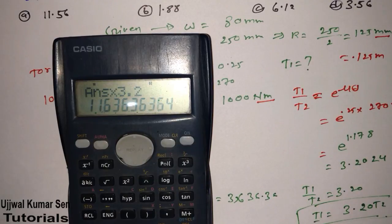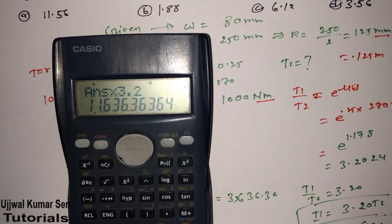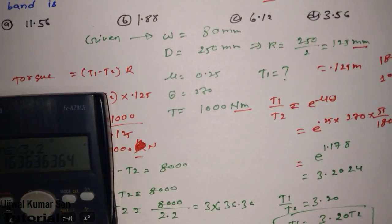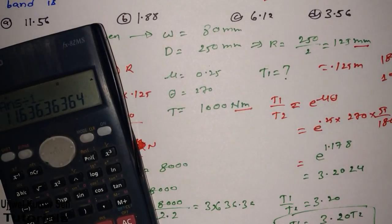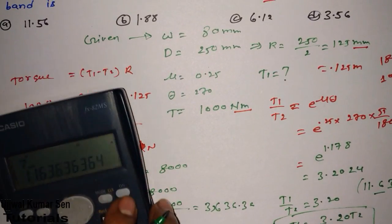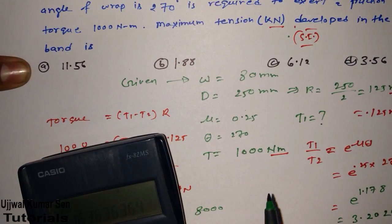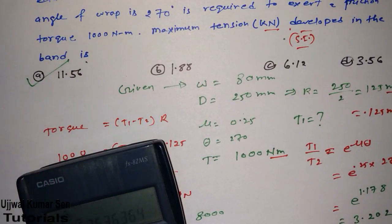Therefore, T1 multiple 3.2 is equal to how much values we are getting basically. It's 11.63 and 0.36. So kilonewton they have asked, I have to division this by 1000. So we got 11.63 kilonewton. So 11.56 is there. So this is the nearest value we got. So definitely this is the right answer for this question.